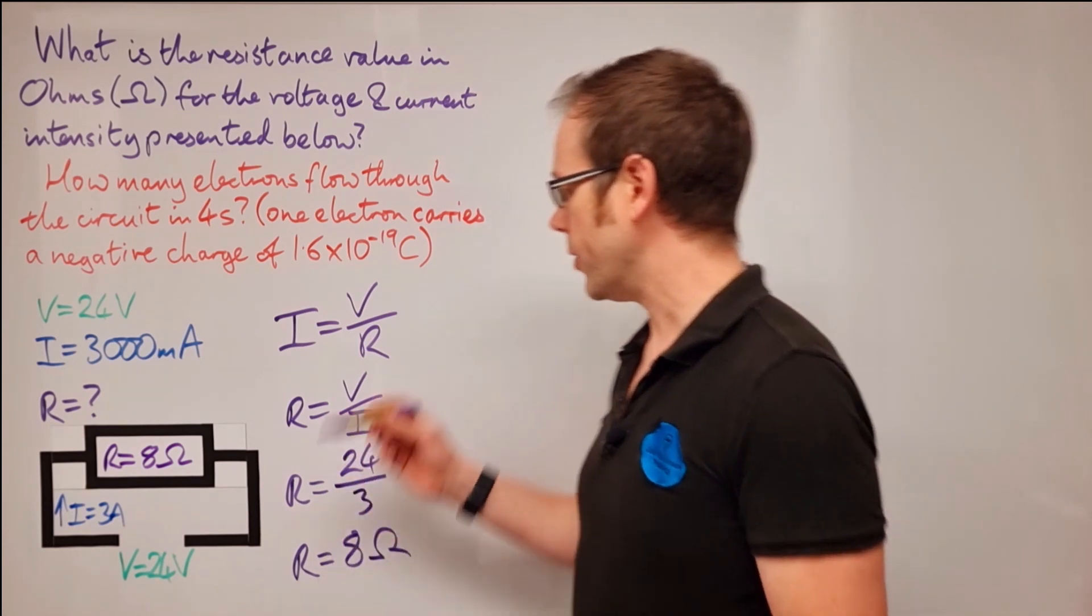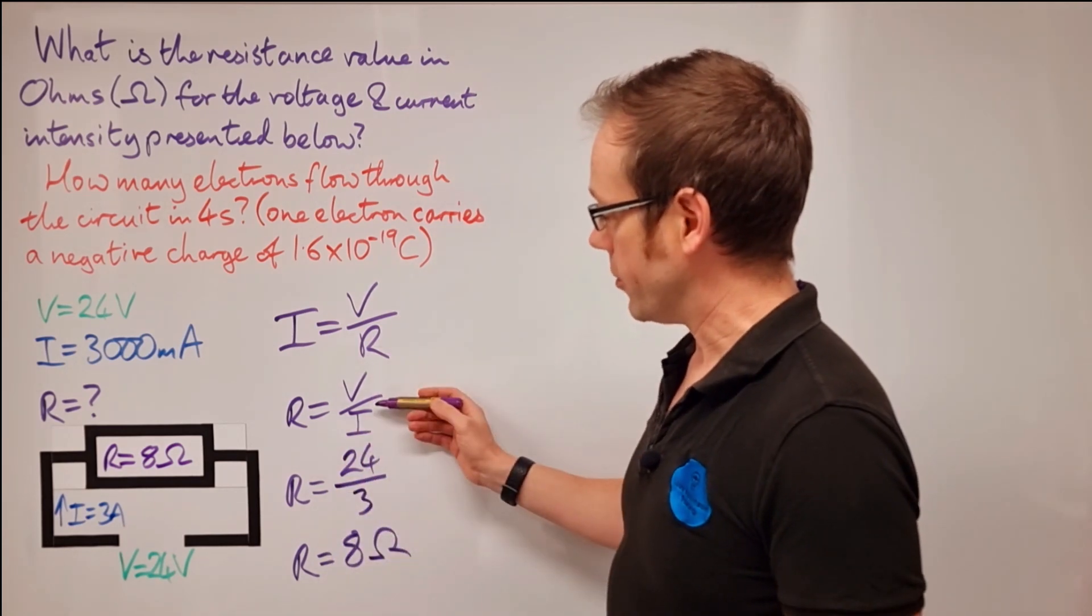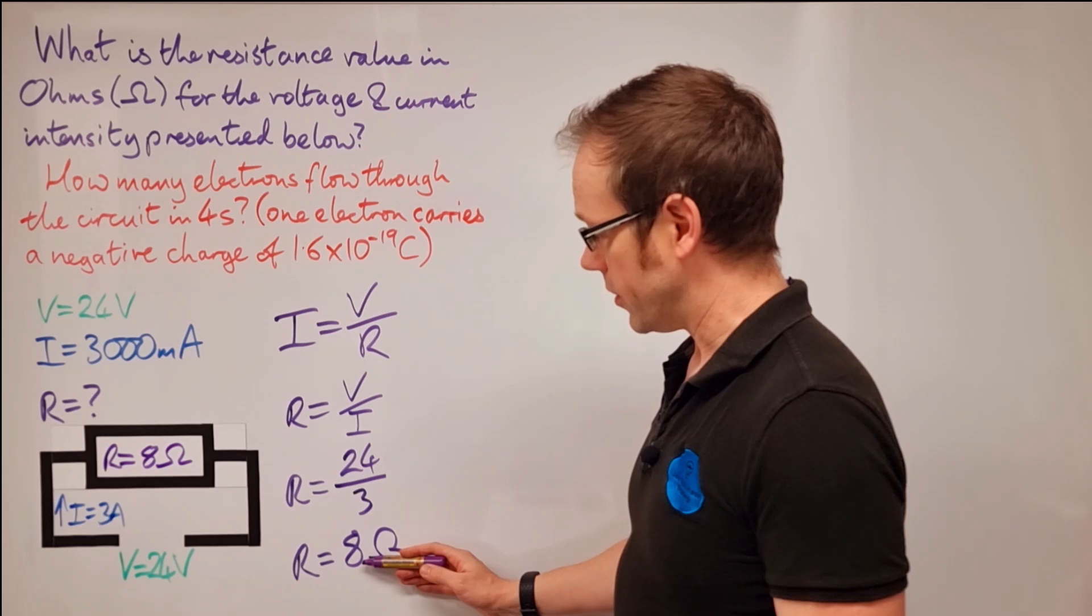And just to clarify that a little further, I've just drawn the circuit down here. And you can see that what we've done is we've applied a voltage of 24 volts to a load, which we can represent with the symbol for a resistor. That voltage applied to that load has resulted in a current flow of 3000 milliamps or three amps, which has led us to the conclusion that this resistor must have a value of eight ohms. So there we go. We've found our value.